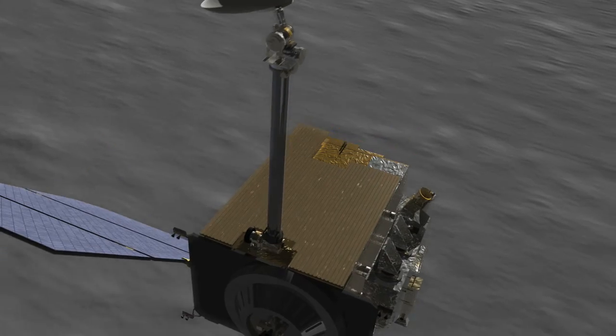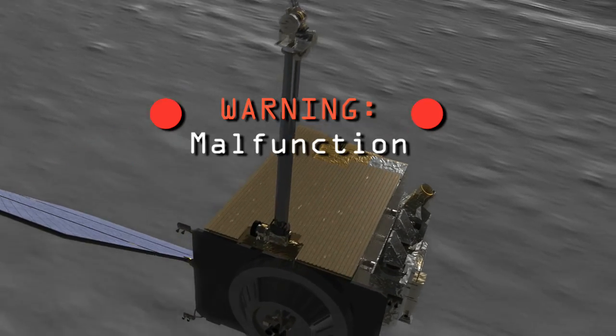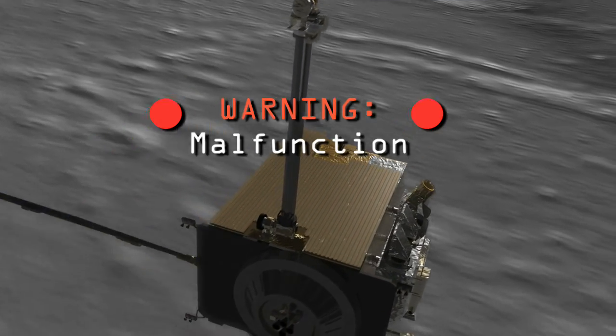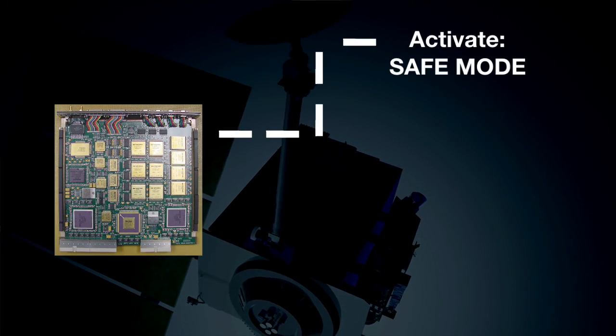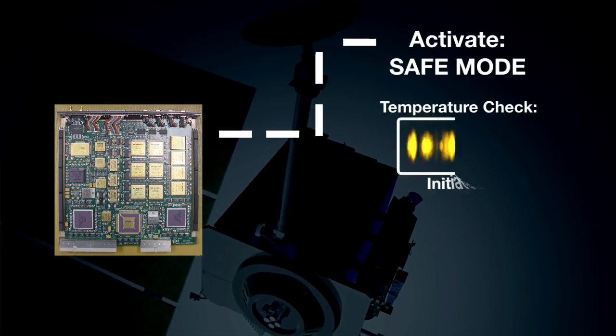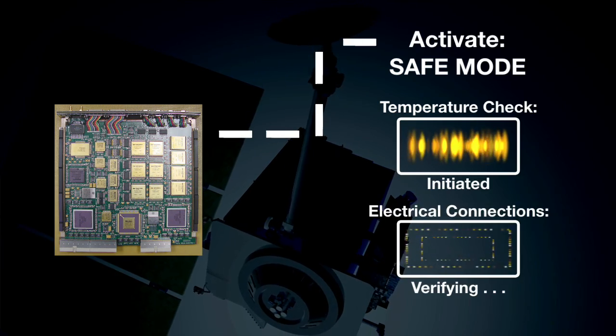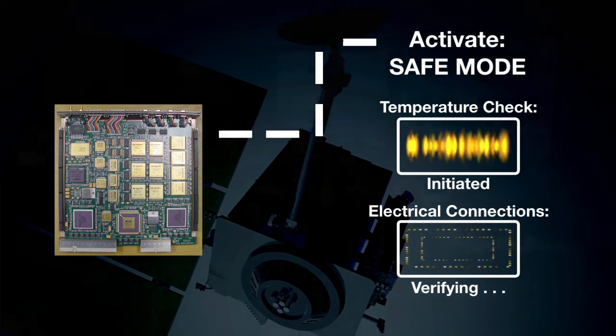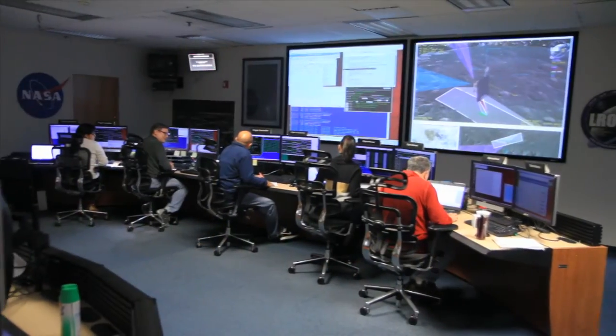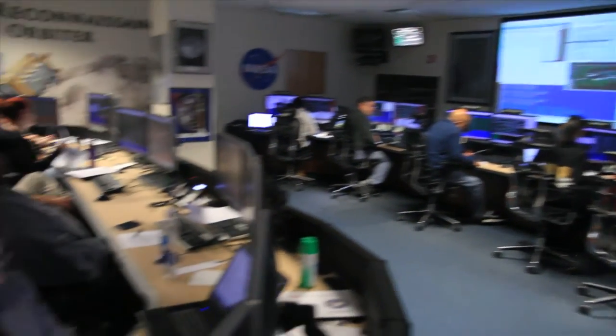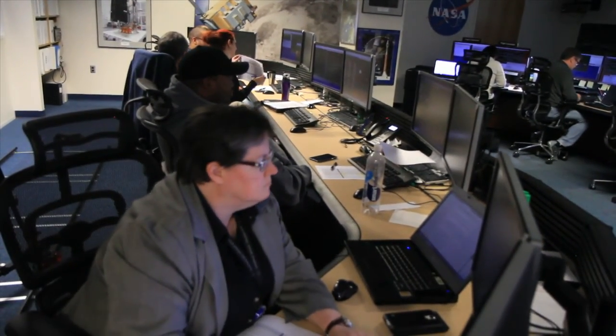If an emergency occurs during spaceflight, the single-board computer can put LRO into a safe mode. This maintains safe temperatures and electricity until the team can contact the satellite and determine the problem.